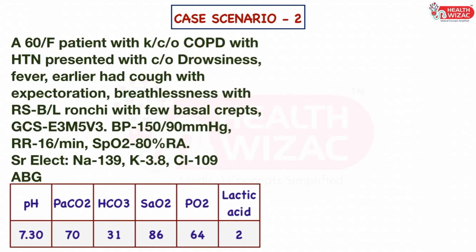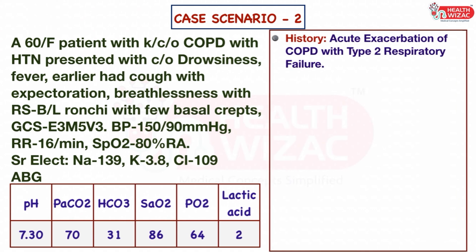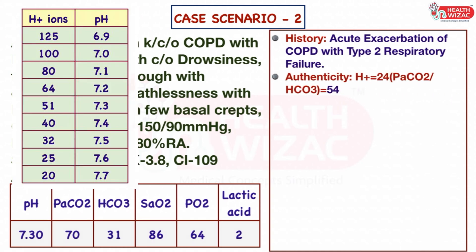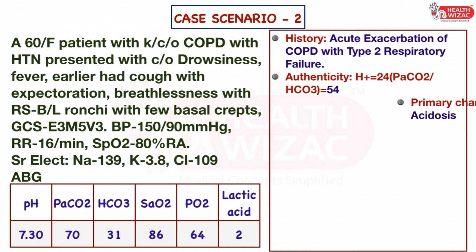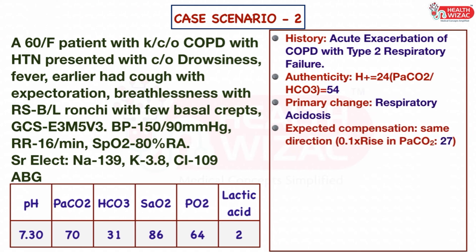Case Scenario 2: A 60-year-old female with known COPD and hypertension presented with drowsiness, fever, productive cough with expectoration, and breathlessness. Respiratory system was suggestive of bilateral rhonchi with few basal crepitations. GCS was E3, M5, V3. Step 1 — history suggestive of acute exacerbation of COPD with type 2 respiratory failure. Step 2 — calculated H+ ion value is 54, which matches the pH range; sample is authentic. Step 3 — primary change is respiratory acidosis. Step 4 — calculated rise in bicarbonate is 27, but the ABG sample shows bicarbonate of 31.